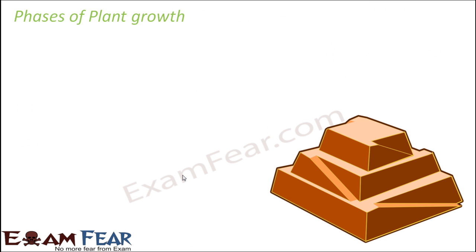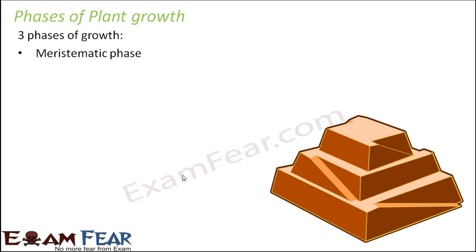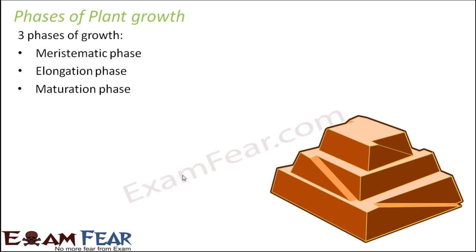Now let us look at the different phases of plant growth. When a plant grows, this process is broadly divided into 3 phases. Phase 1 is the meristematic phase, which is followed by the elongation phase, and finally the maturation phase. No matter whichever plant it is, we will go through these 3 phases.